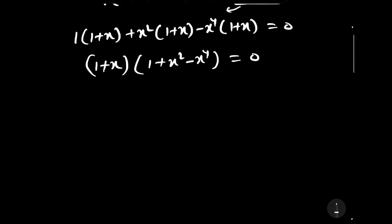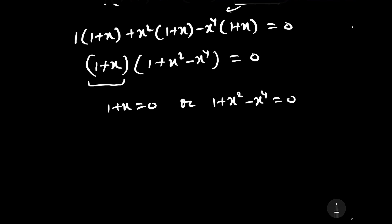Now we have two factors. Either (1 plus x) equals 0, or (1 plus x squared minus x to the power 4) equals 0. From the first factor we find that x equals minus 1, and this is one of the solutions.